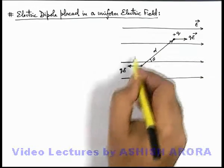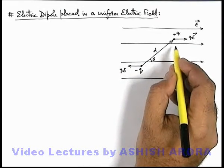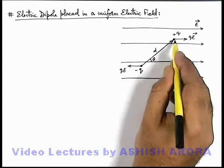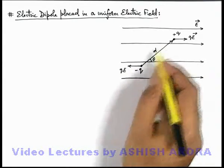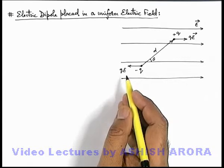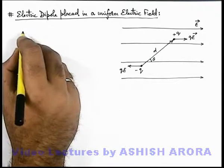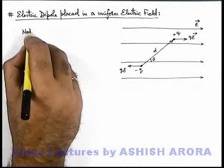And as the dipole itself is a system, and in all it is experiencing one force forward one backward, so net force acting on the dipole in uniform electric field we can directly state it should be zero.